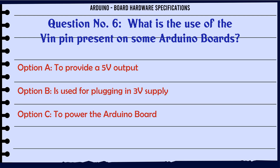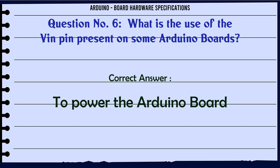What is the use of the Vin pin present on some Arduino boards? A: To provide a 5V output. B: Is used for plugging in a 3V supply. C: To power the Arduino board. D: To ground the Arduino board. The correct answer is: To power the Arduino board.